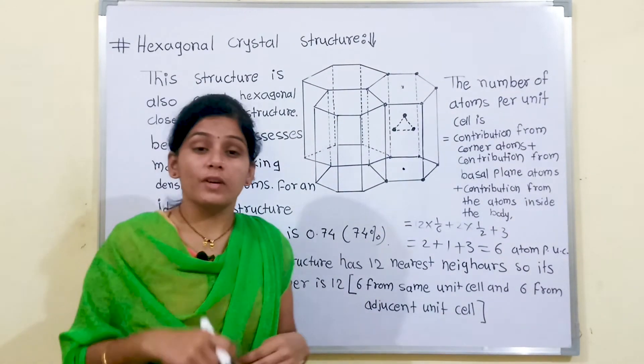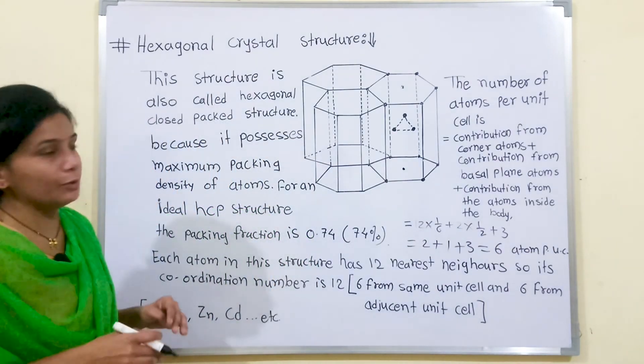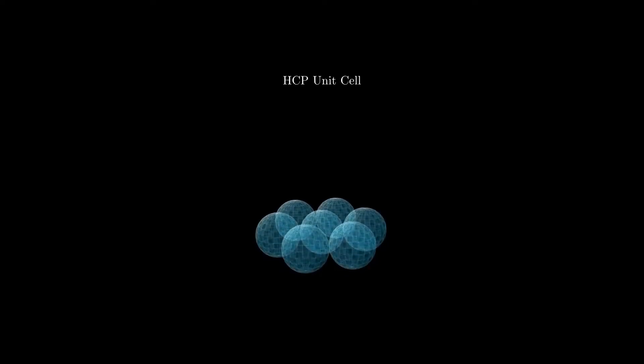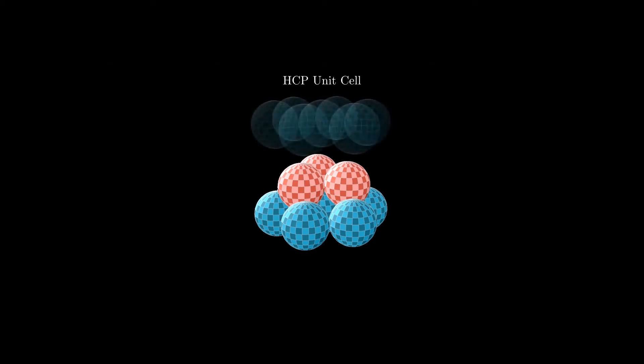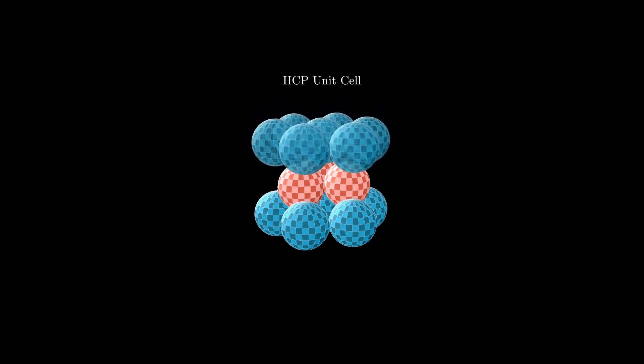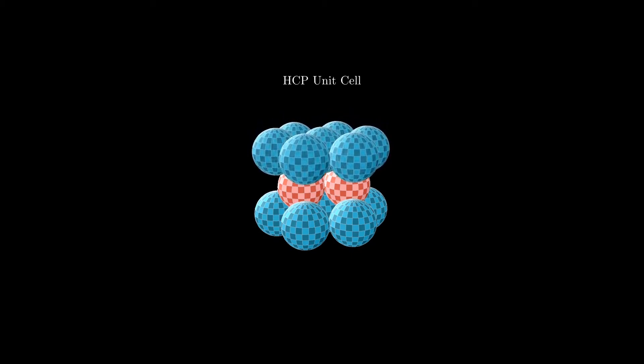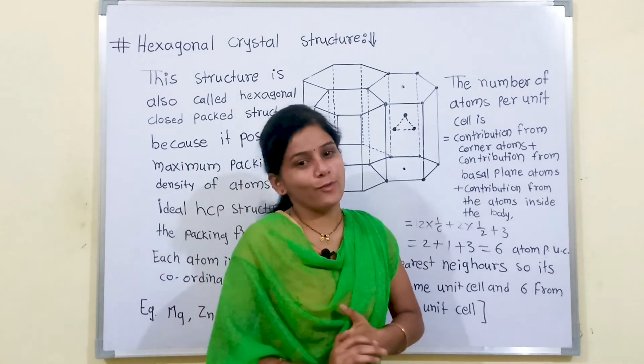Now we will see how to construct the hexagonal crystal structure. If we consider this is A layer and we can see here the right hand side, if we construct the B layer on the right hand side of A layer, it looks like this and similarly we can construct next layer. We will get hexagonal crystal structure. Thank you for watching this video.